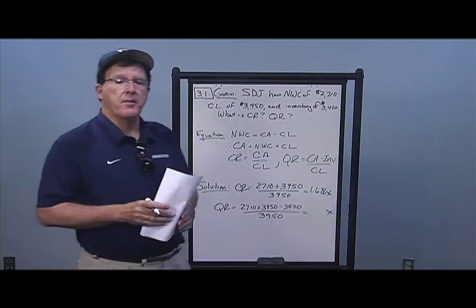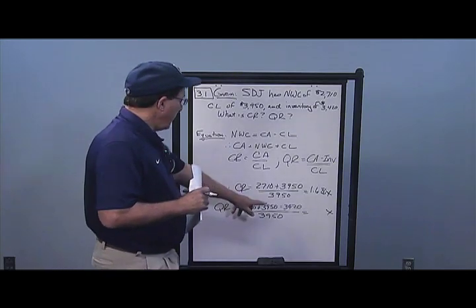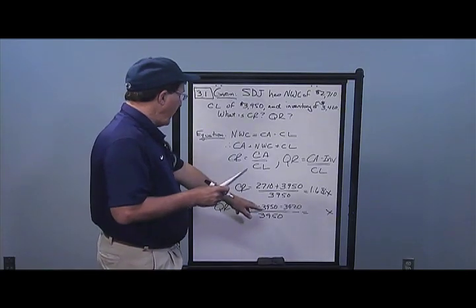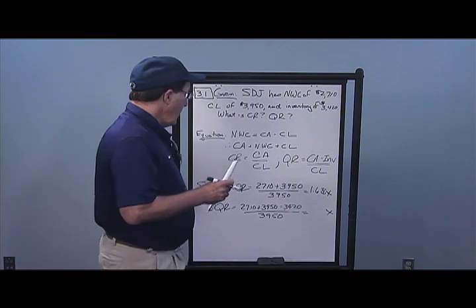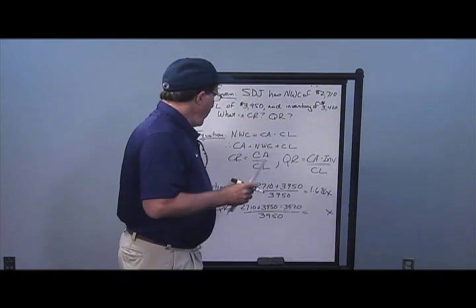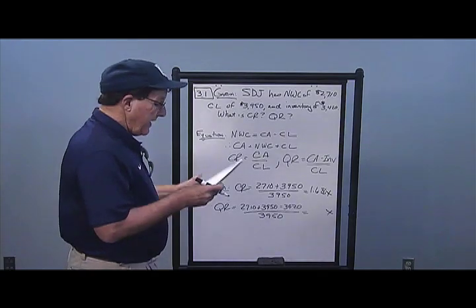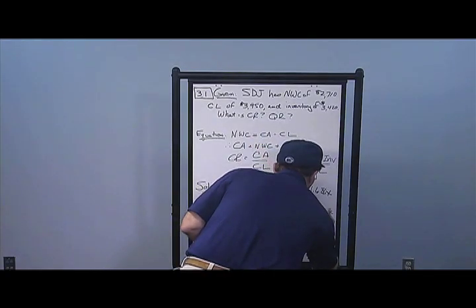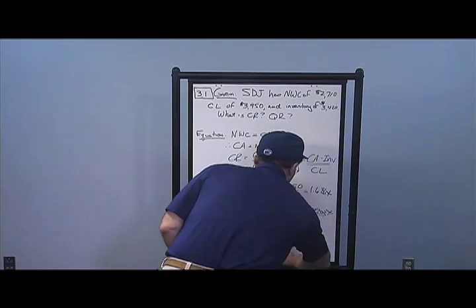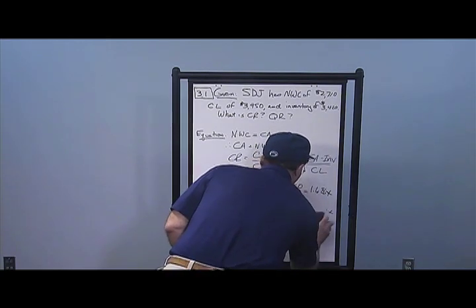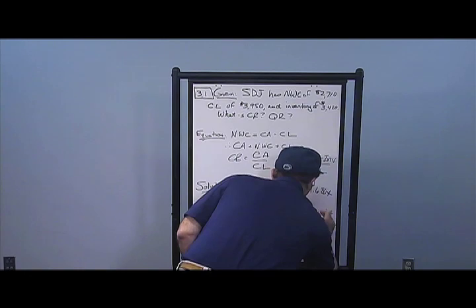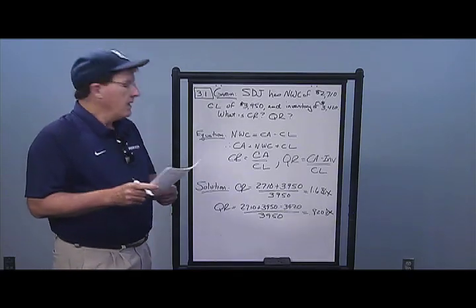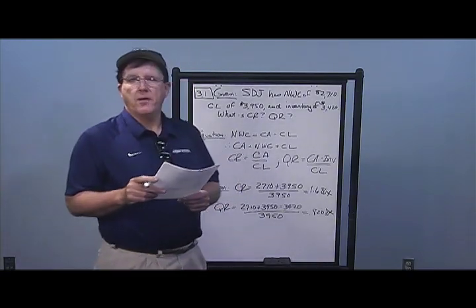For the quick ratio, I need to find out how liquid the company really is by subtracting inventory. I take current assets minus inventory over current liabilities: 2710 plus 3950 minus 3420, divided by current liabilities of 3950, and I get 0.8203 times. Since I'm dividing dollars by dollars, that's where the 'times' comes from. That is my answer for Problem 1.